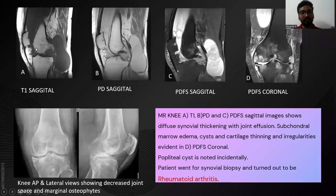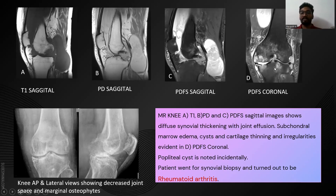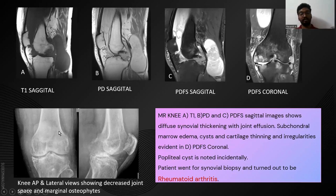In our case, on T1 sagittal, PD sagittal, and PDFS sagittal sequences, there is diffuse synovial thickening along the synovium, which is more evident on PDFS. On PDFS coronal you can see cartilage loss and sub-chondral marrow edema. This patient went for synovial biopsy and it turned out to be rheumatoid arthritis. The radiograph of the same patient showed bone erosive changes and marginal osteophytes.